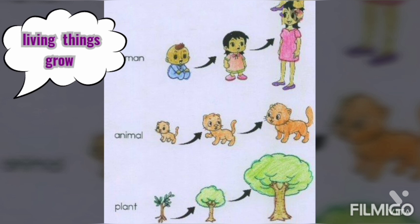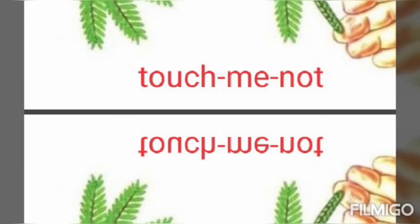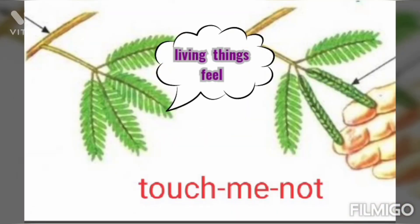Living things grow. All living things grow and change throughout their life. A child grows into an adult. A baby plant grows into a tree. A puppy grows into a dog. Non-living things do not grow. Living things feel the changes around them. The leaves of the touch-me-not plant close when they are touched. Non-living things do not feel.